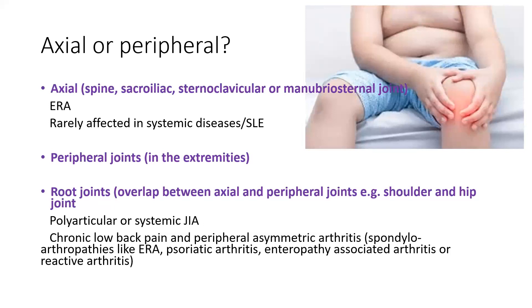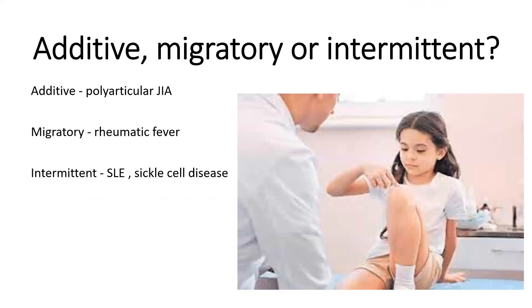Also assess root joint involvement — shoulder and hip — which are at the overlap between axial and peripheral joints. Recognize different patterns: migratory arthritis is typical of rheumatic fever; additive arthritis (progressing from monoarthritis to oligo to polyarthritis) is typical of polyarticular JIA; and intermittent arthritis is seen in hemophilia with hemarthrosis and sickle cell disease.